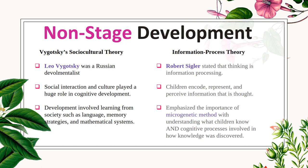The non-stage development is where it doesn't continually go through stages — it's continuous. Vygotsky's sociocultural theory believed that social interaction and culture played a huge role in cognitive development, going through society via language, memory strategies, and mathematical systems. Robert Siegler had the information processing theory. He strongly believed that children encoded, represented, and perceived information via thought, with an emphasis on the microgenetic method — understanding what children knew and the cognitive processes involved in knowledge received.